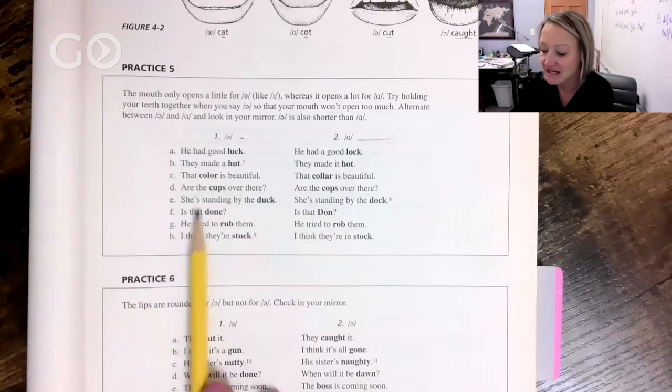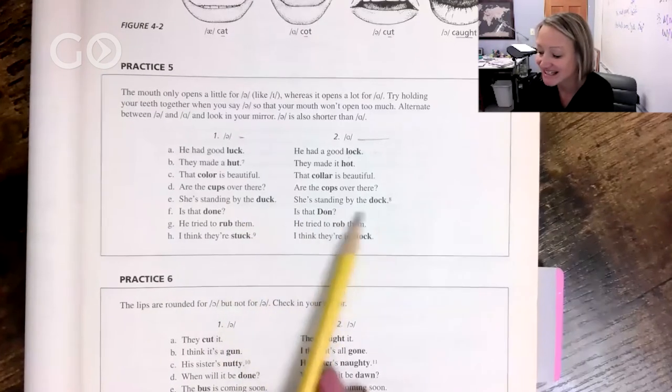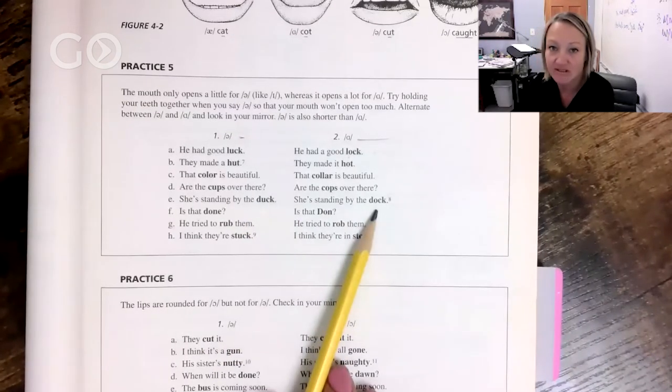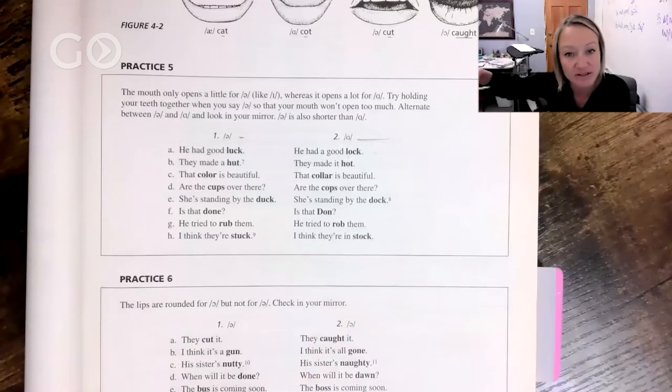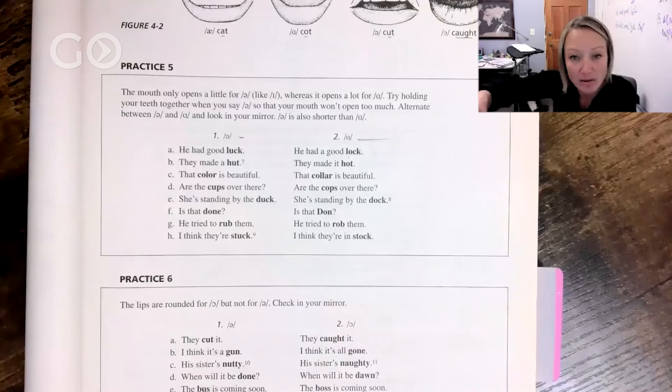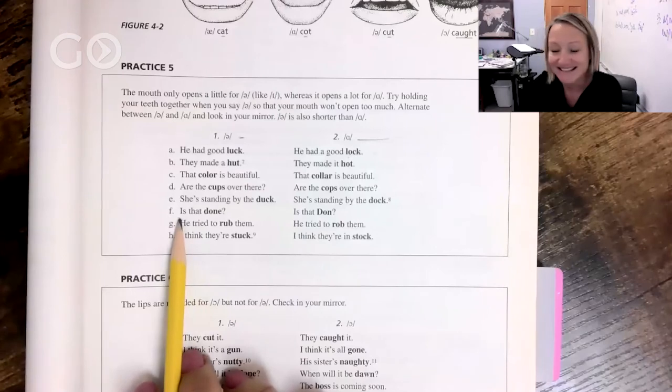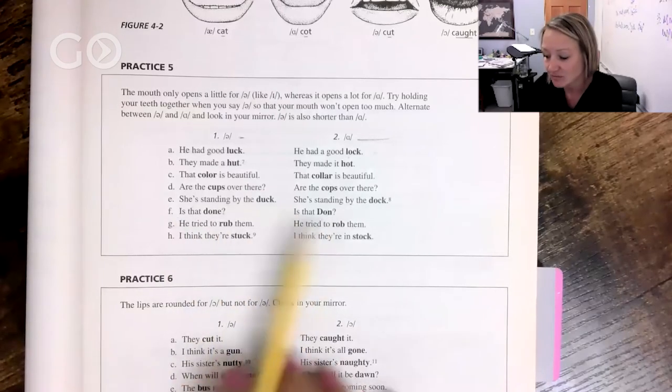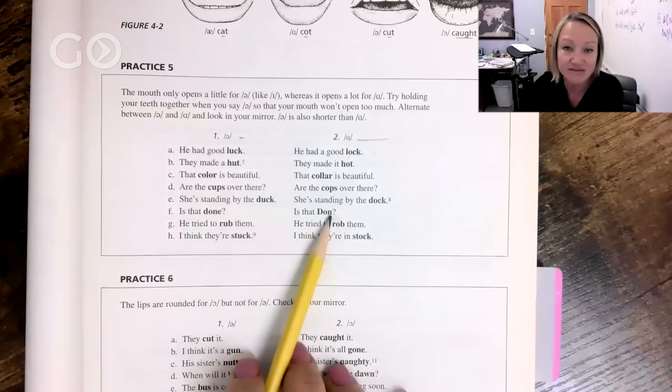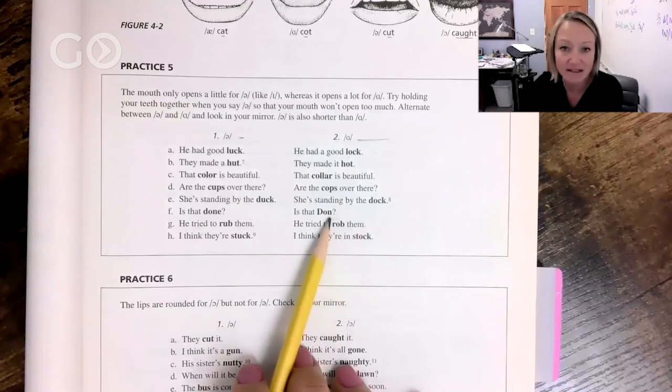She's standing by the duck, the animal, the duck. She's standing by the dock—the dock, right, where you know, a place where a boat can kind of tie up, or a place where like a sidewalk that goes into a river or lake or something or the ocean. Is that done? Is that Don? Okay, so I'm putting emphasis on that so you can hear the difference. Done, Don. Okay, Don is a man's name.